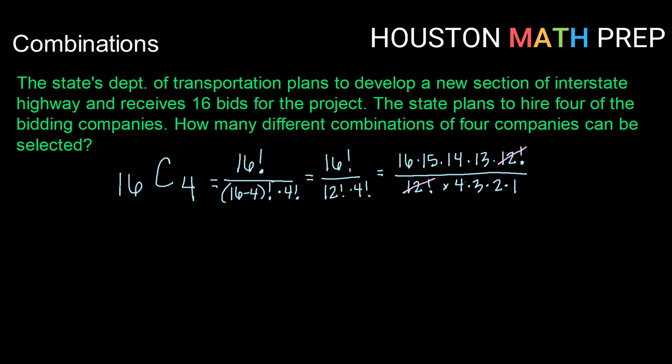So 4 times 2 is 8 and I know that can go into 16 two times. And that leaves me only with the 3 on the bottom. And I know 3 can go into 15 five times.